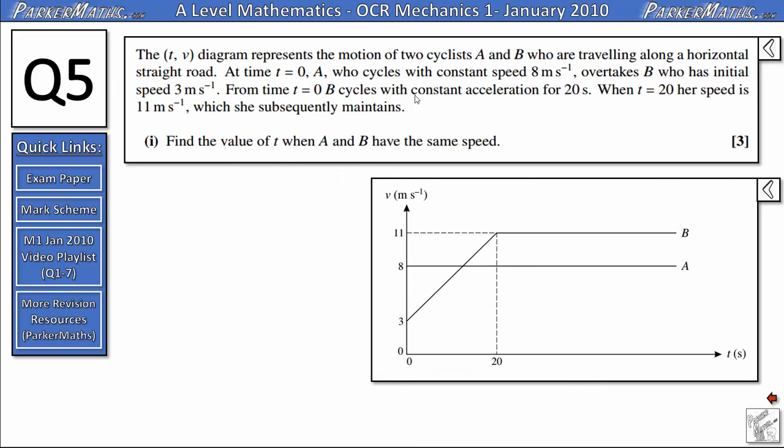The velocity time diagram represents the motion of two cyclists A and B who are travelling along a horizontal straight road. At time t equals 0, A who cycles with constant speed 8 metres per second overtakes B who has initial speed 3 metres per second. From time t equals 0, B cycles with constant acceleration for 20 seconds. When t equals 20 her speed is 11 metres per second which she subsequently maintains.